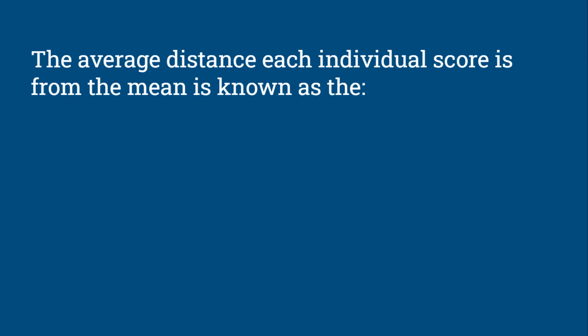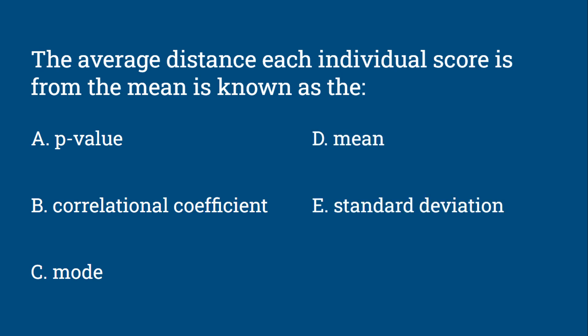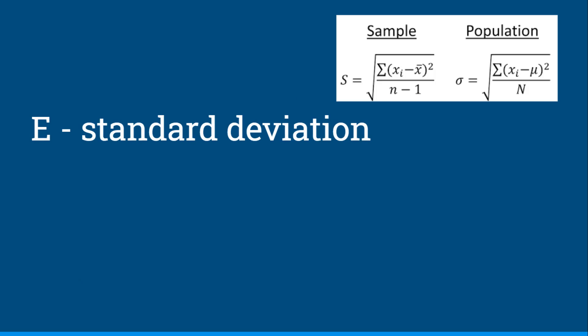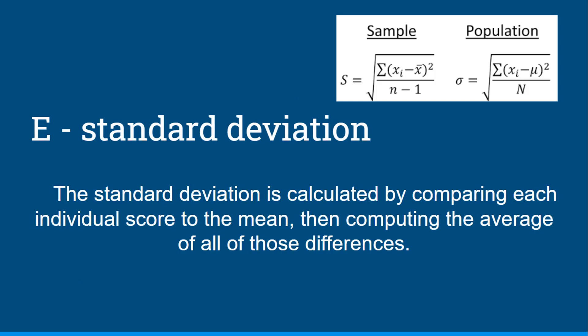The average distance each individual score is from the mean is known as the: p-value, correlational coefficient, mode, mean, or standard deviation? This would be the standard deviation. The standard deviation is calculated by comparing each individual score to the mean and then computing the average of all those differences, so it tells us how far each score is on average from the mean.